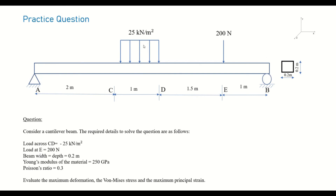We have two different loads: a uniform load of 25 kN per meter square from C to D, and a point load of 200 newtons at point E. Solve for maximum deformation, Von Mises stress, and maximum principal strain. Give it a try — I'll post the solution next week.